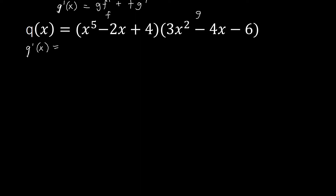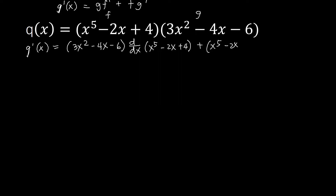So following the format, we can have our g — we just simply copy the g there, the second factor, which is 3x squared minus 4x minus 6. And then we get the derivative of the first factor, which is x to the power 5 minus 2x plus 4. Then plus our f, which is x to the power 5 minus 2x plus 4, and then we get the derivative of the other factor, which is 3x squared minus 4x minus 6.